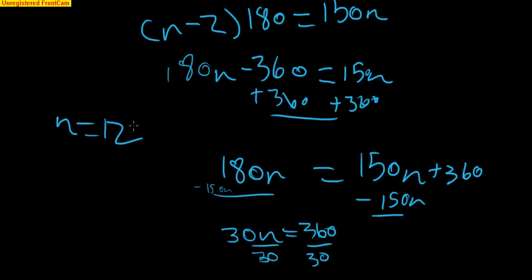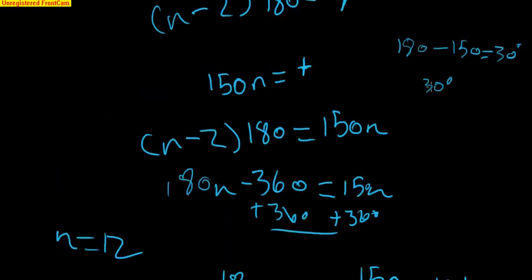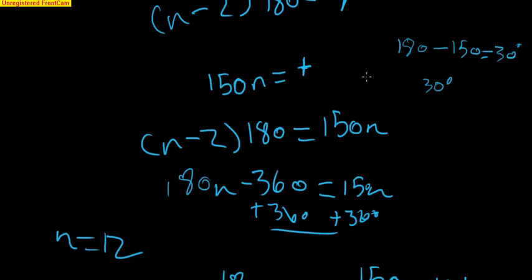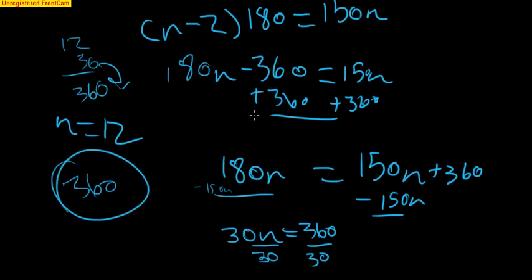So 12 sides means 12 exterior angles. And we determined up here that 30 degrees was each exterior angle. So 12 times 30 is going to be the same as 360. Because 12 times 3 is 36. Add that 0 on from the 30, and we're going to get 360 degrees. So that works out.